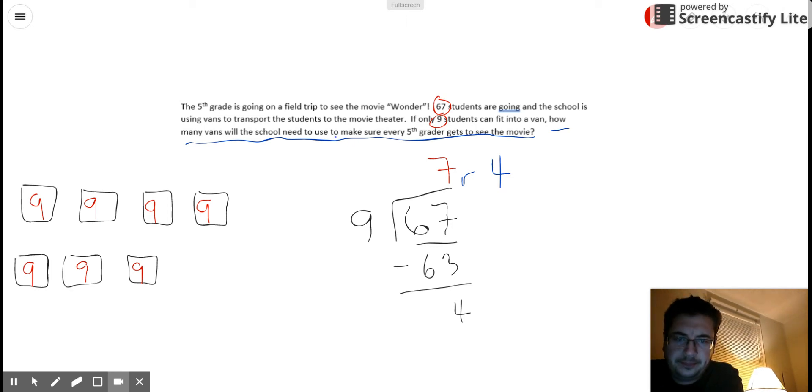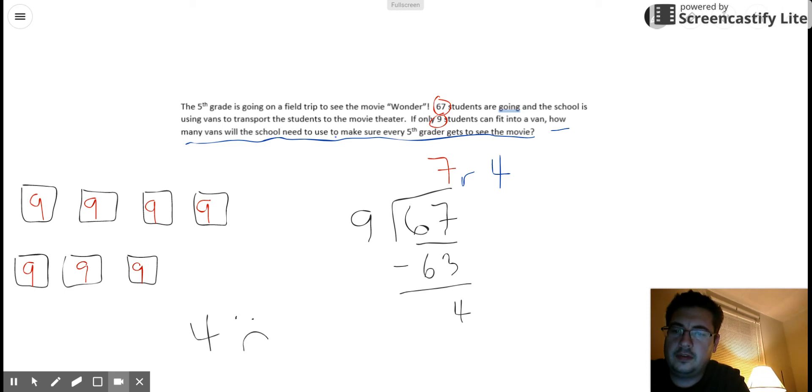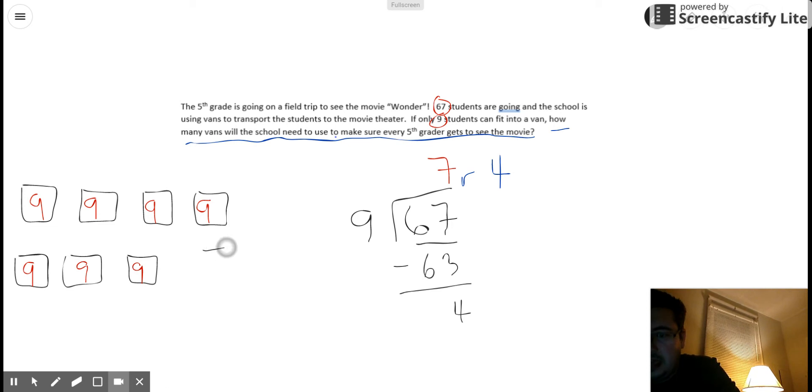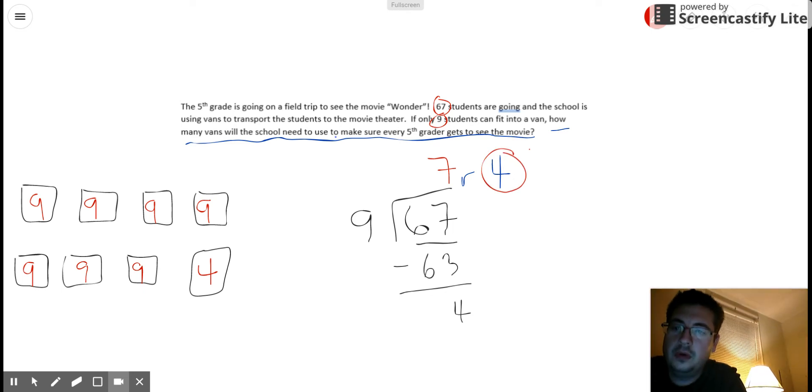I can do 1 of 2 things. I can either leave 4 students behind at school. So they're not in a van. And they're very sad. They're not going to get to see Wonder. Or I can use an 8th van. And remember, that 8th van is not going to be full. It's only going to have 4 students, which is our remainder. So it's not going to be full. But now that I have 8 vans, all 67 students are going to be able to go to the movie theater. So the 5th grade class is going to be very happy.